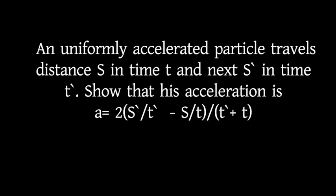A uniformly accelerated particle travels distance s in time t, and next distance s' in time t'. Show that its acceleration a equals 2 within bracket s' by t' minus s by t, divided by t' plus t.